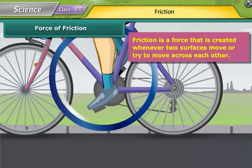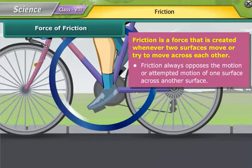Friction is a force that is created whenever two surfaces move or try to move across each other. Friction always opposes the motion or attempted motion of one surface across another surface. The force which resists the motion of a body while moving on a surface is called friction.